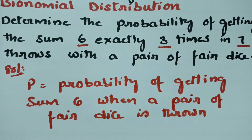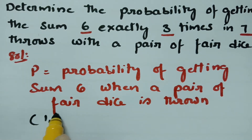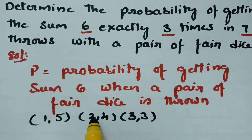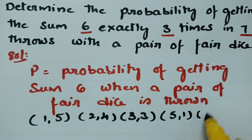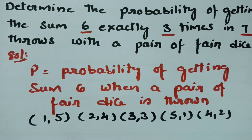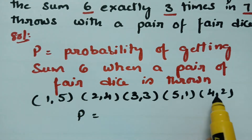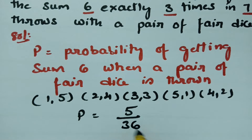The ways to get a sum of 6 are: (1,5), (2,4), (3,3), (4,2), and (5,1). So there are 5 favorable outcomes in total — that gives us 5 chances out of 36.